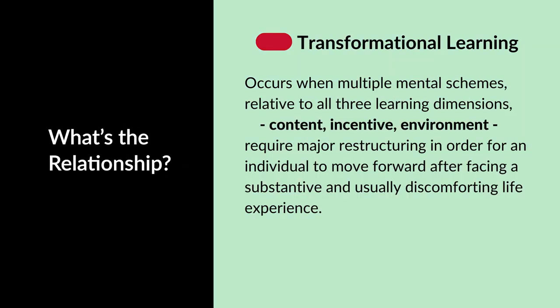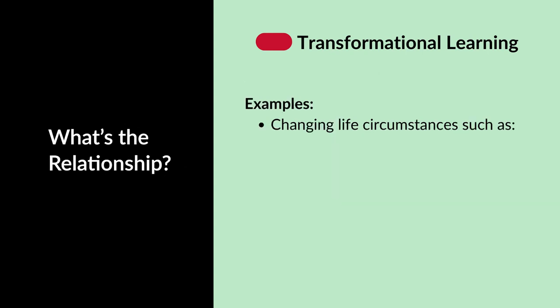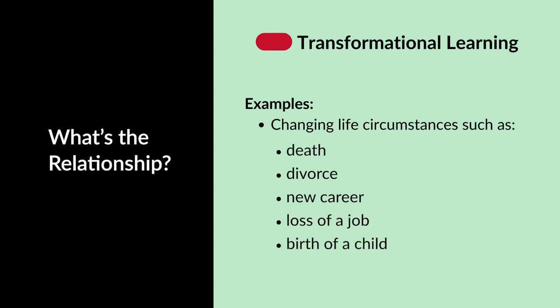Finally, transformational learning occurs when multiple mental schemes relative to all three learning dimensions — content, incentive, and environment — require major restructuring in order for an individual to move forward after facing a substantive and usually discomforting life experience. These significant learning experiences may be planned or unplanned and positive or negative. Examples include changing life circumstances such as death of a loved one, divorce, new career, loss of a job, or birth of a child.